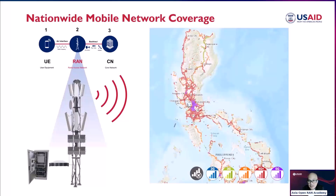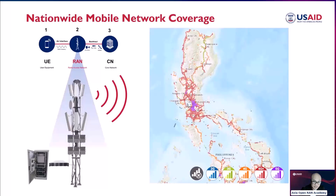For example, in urban areas with high population density and building density, network operators may need to deploy more cell sites with lower output power to provide coverage to smaller areas. While in rural areas with lower population density, network operators may need to deploy fewer sites with higher output power to provide coverage to larger areas.